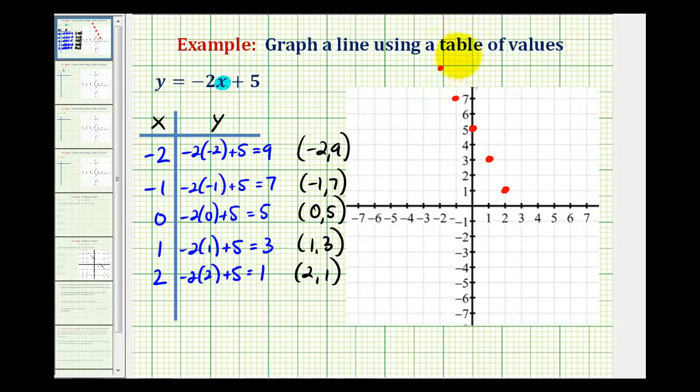Everything looks good here because notice that all of these points line up to form a single line. So the graph of y equals negative two x plus five would be the line passing through these five points. So it would look something like this.